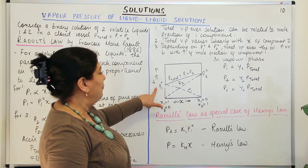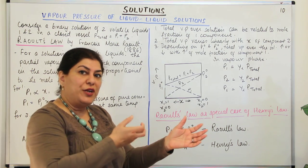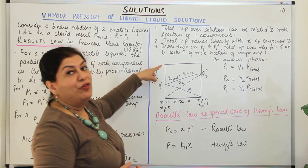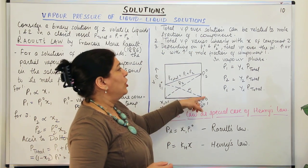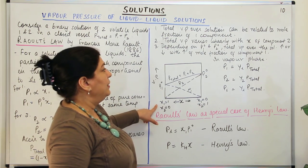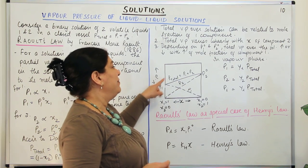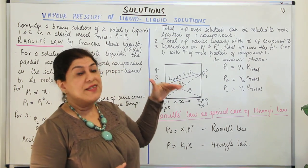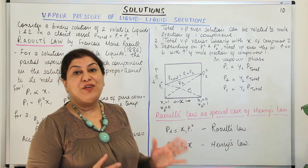On the other hand, if the vapor pressure of component 1 is greater than P2⁰, then as the concentration of component 1 increases, P total would keep increasing until it reaches P1⁰, which is higher. So depending on P1⁰ and P2⁰, the total vapor pressure can increase or decrease with increasing mole fraction of component 1. What decides whether it increases or decreases is the relative values of P1⁰ and P2⁰ — if P1⁰ is higher than P2⁰ it will increase; if P1⁰ is lower than P2⁰ it will decrease.